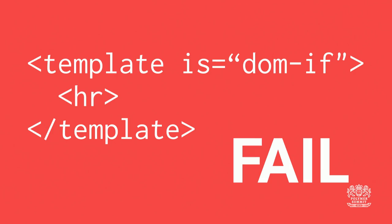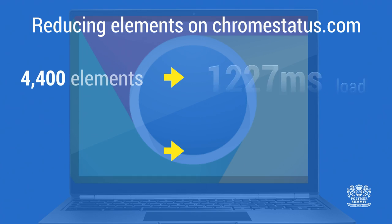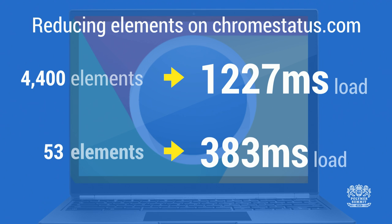A note on dom-if: don't use it for trivial things like HR tags — use CSS instead. Use it when the user is interacting with your app and you need to generate DOM conditionally. If you have a lot of custom elements inside a dom-repeat, that's a great time to use dom-if. For Chrome Status, these two improvements — iron-list and dom-if — reduced elements at page load from about 4,000 to 53, and load time from 1.2 seconds down to 383 milliseconds, about 844 milliseconds faster.